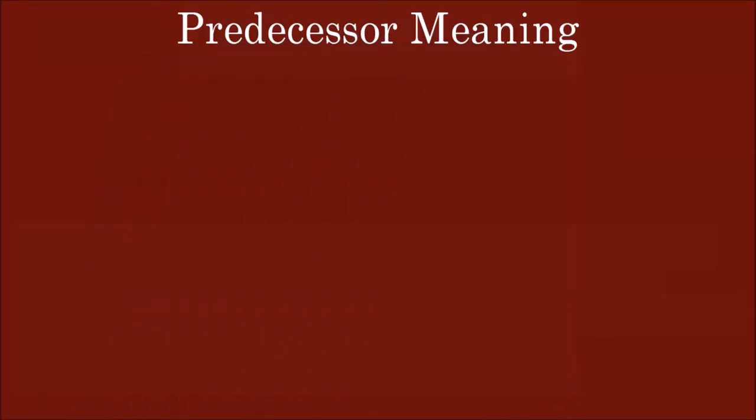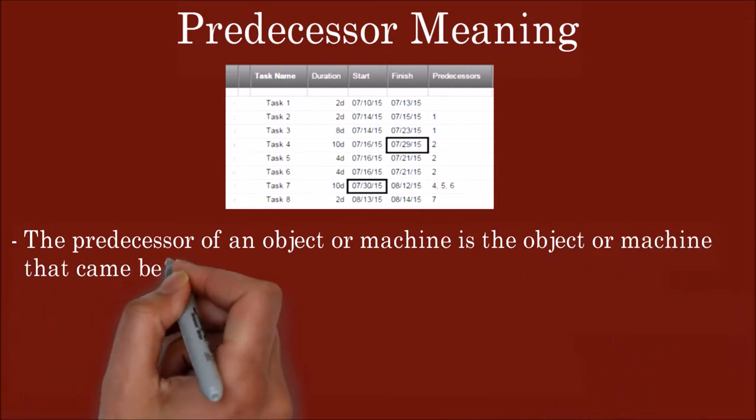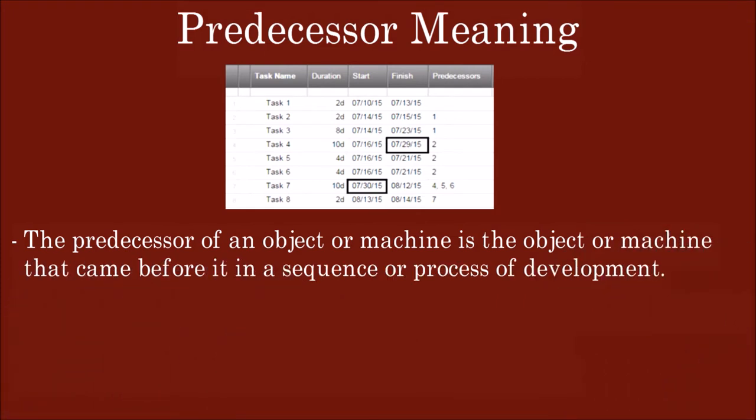Predecessor. Meaning of predecessor. The predecessor of an object or machine is the object or machine that came before it in a sequence or process of development.